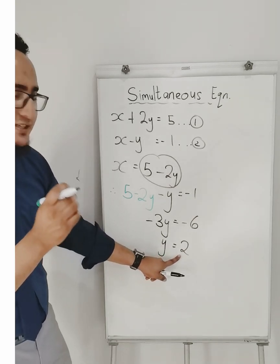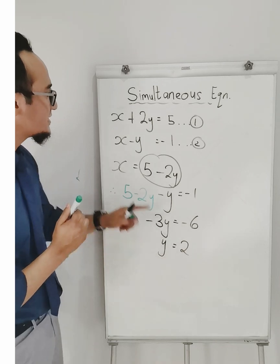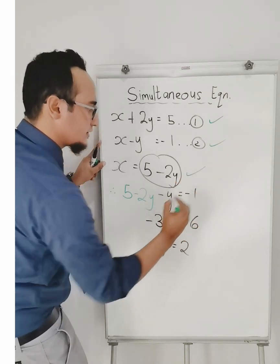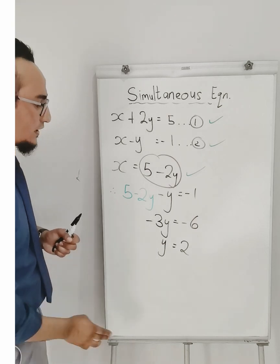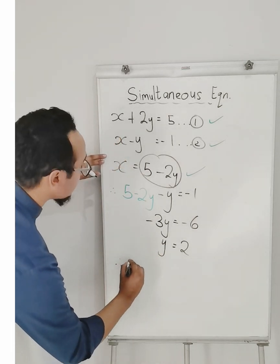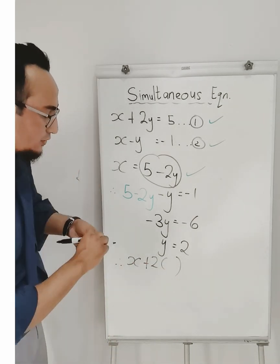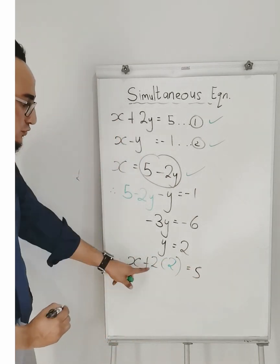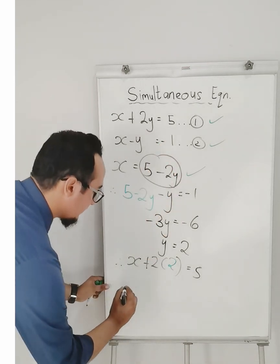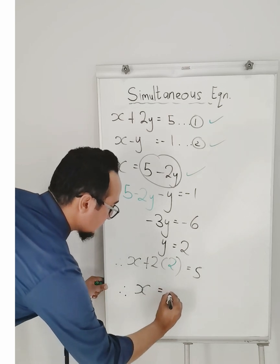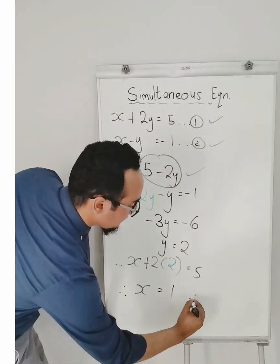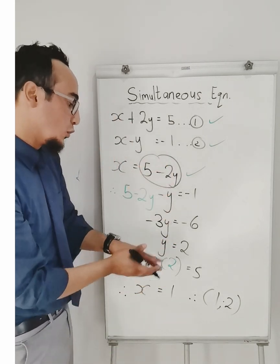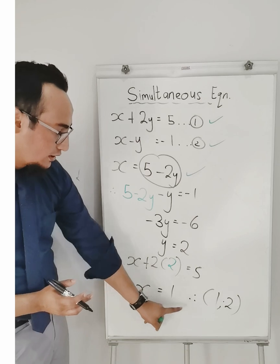Now remember I still need to calculate the value of x. So I take my y and substitute it either into my first equation, my second equation, or this part over here — you'll get the same answer from all of them. So let's take the first equation. Therefore, x plus 2y, and the value of y is 2, must be equal to 5. So 2 times 2 is 4. If I take the 4 over, it becomes negative 4, and therefore x is going to be equal to 1. The value of x is 1 and the value of y is 2. Sometimes teachers want you to write it as a coordinate: x is 1 and y is 2.